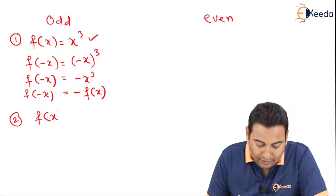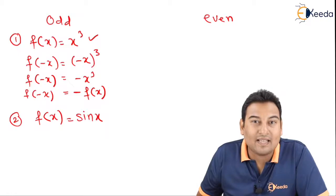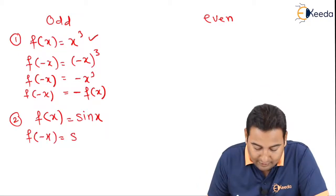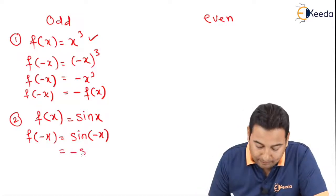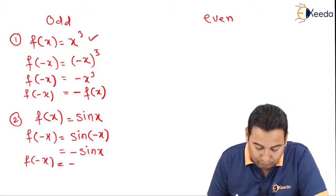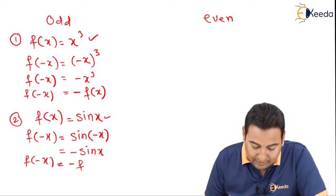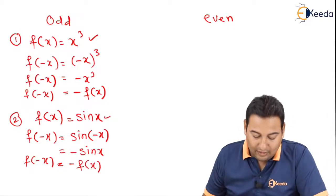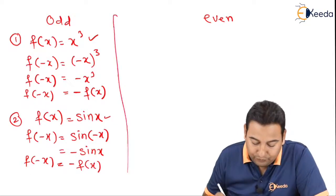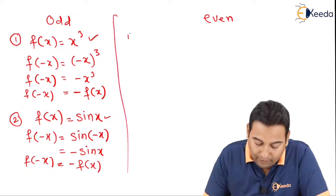Let's check one more example. Let's say f(x) = sin(x). Replace x with minus x: f(−x) = sin(−x) = −sin(x), which equals −f(x). So f(−x) = −f(x), meaning the function is odd. This is how we check for an odd function.